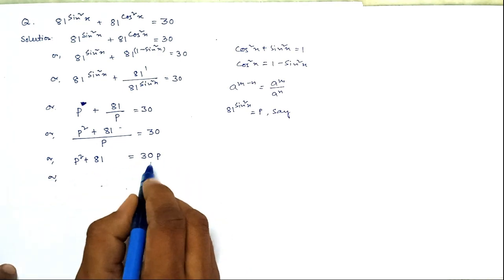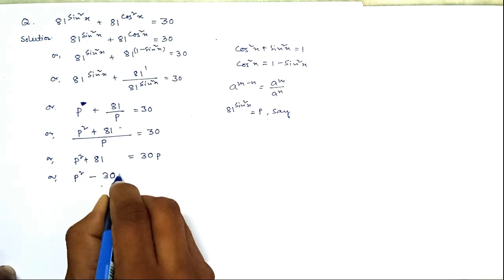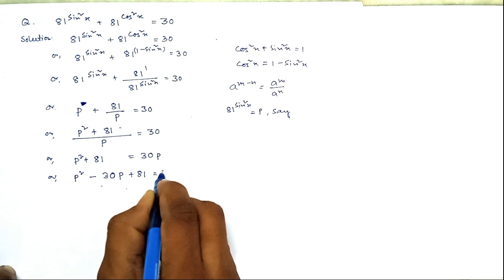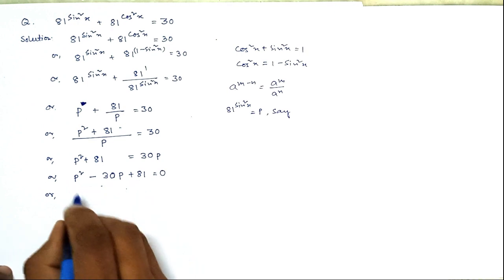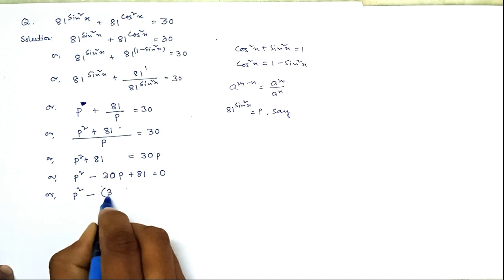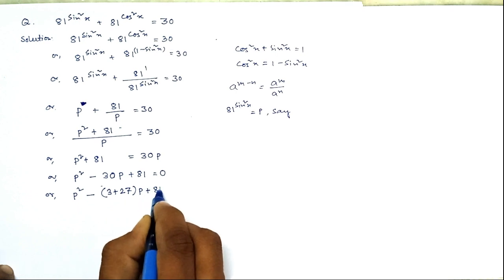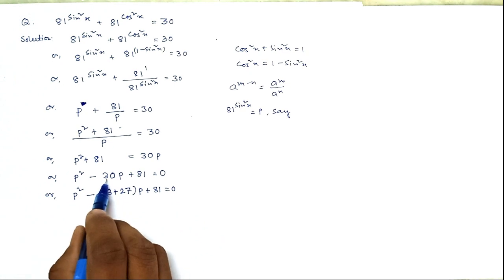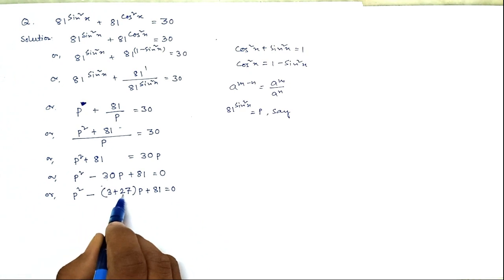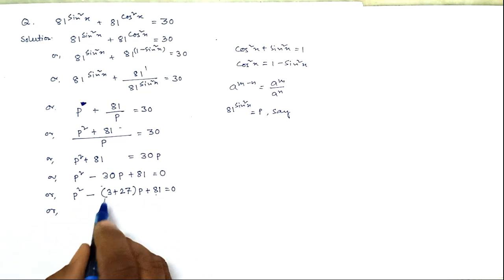Taking 30p to the left-hand side gives us p squared minus 30p plus 81 equals 0. We now factorize this equation. We split the middle term as 3p plus 27p, because 3 plus 27 equals 30 and 3 times 27 equals 81.